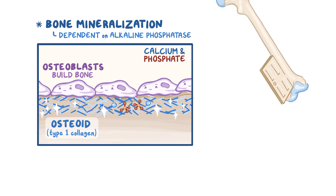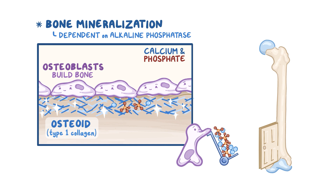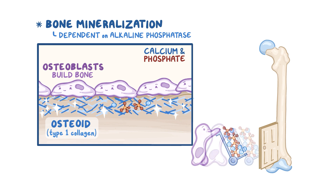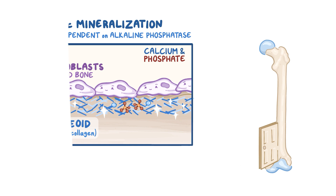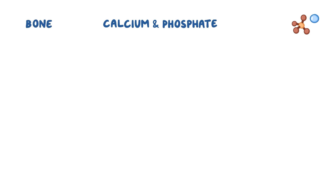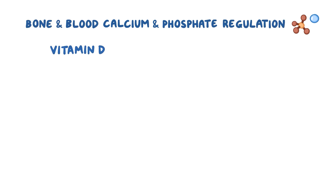At the end of the day, bones are like a storage warehouse for calcium and phosphate. Now the levels of calcium and phosphate in the bone, but also in the blood, are regulated by vitamin D and parathyroid hormone, or PTH.